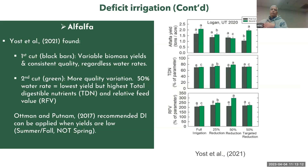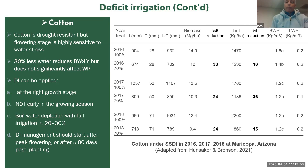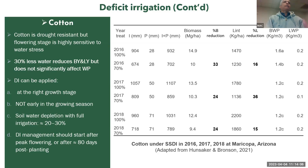Similar deficit strategies can be applied to alfalfa and cotton, though with limitations. For cotton, stress cannot be applied during spring — only during summer and fall — and generally stress should not begin before 80 days after planting. Using subsurface drip may allow earlier stress application. Doug's experiment on cotton showed that at 70% ET replacement, yield differences compared to 100% ET were generally small, though one year showed a larger reduction.